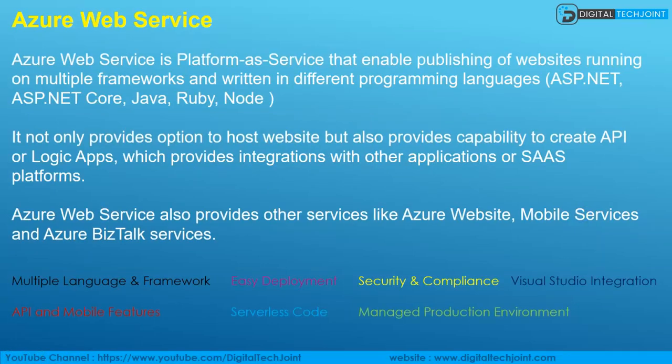What is Azure Web Service? Azure Web Service is a platform-as-a-service that enables publishing of websites running on multiple frameworks and written in different programming languages like ASP.NET, Java, Ruby, and Node. It is similar to IIS on your Windows server where you upload your websites so they are accessible globally.